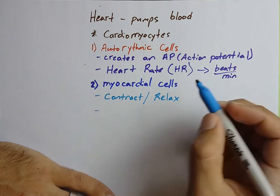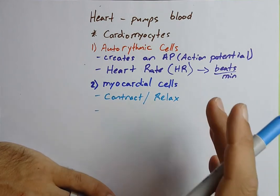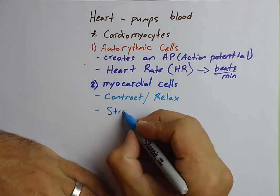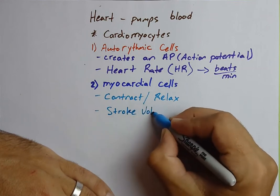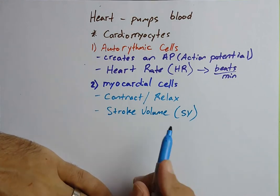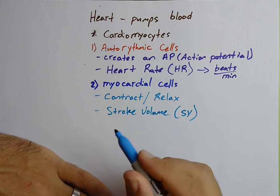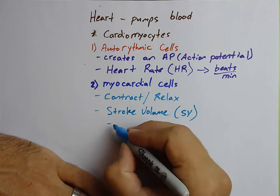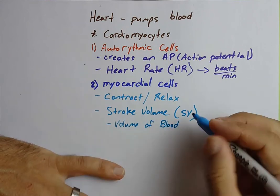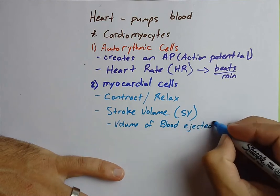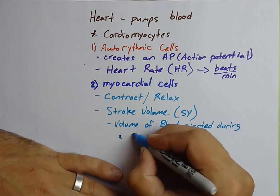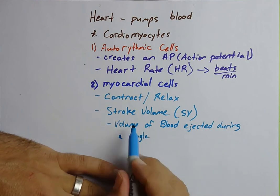This volume of blood is the volume that occurs in a single stroke, a single contraction of the heart. It's called stroke volume, or SV. This is the volume of blood ejected in a single cardiac cycle — each time the heart beats, it ejects a certain volume of blood. That's stroke volume.